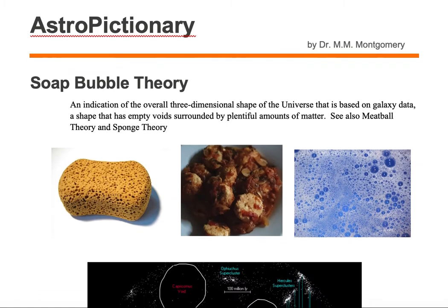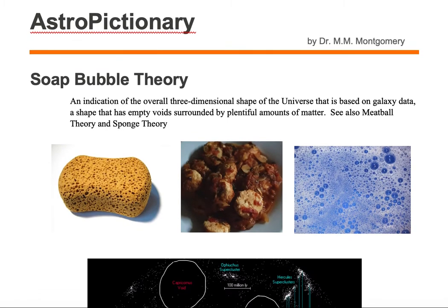The general question we want to answer is: what is the overall shape of the universe? Does it look more like a sponge, where we have lots of fibrous material and little regions of holes in between? Or does it look more like meatballs, where you have lots of dense galaxies or superclusters of galaxies with very little material in between?